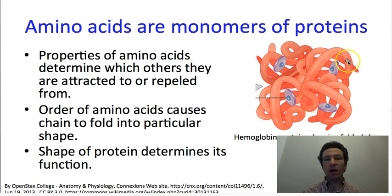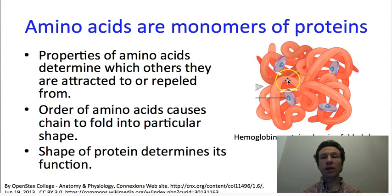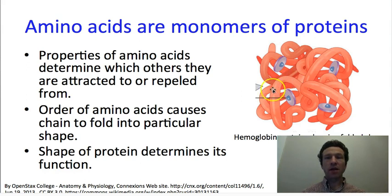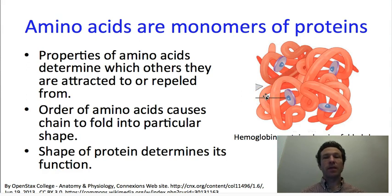Each of those 20 amino acids has different chemical properties that determine which amino acids it can interact with and which it is repelled from. For example, maybe the green amino acid is attracted to the brown one and repelled by the red one — if that's true, then if this chain were to fold, it would fold into a shape where the green one ends up near the brown one but not the red one. Once we have a very long chain, the net interactions between every amino acid and the others cause the chain to fold into a very particular shape. For example, hemoglobin folds into a shape that holds a heme group where oxygen can be held and moved around in our blood. If we had different amino acids in the chain, it would not fold in exactly the same way, changing its ability to move oxygen around.